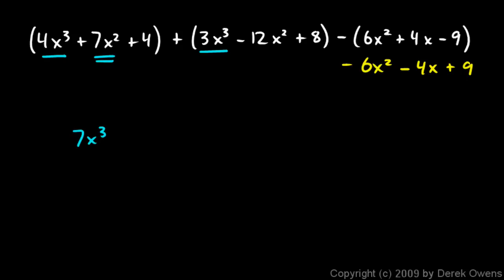And then here I have a 7x², and a -12x², and a -6x². So what's that going to give me? The 7 and the -12 give me a -5x². And then when I also include that -6x², that gives me a total of -11x².